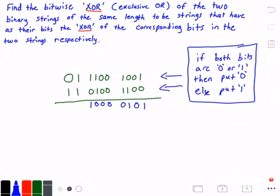Then we have one and one so we put zero because the two bits are the same. And then we have zero and one so we put one. And so that is our answer. Oops, let's make that line a little bit better.